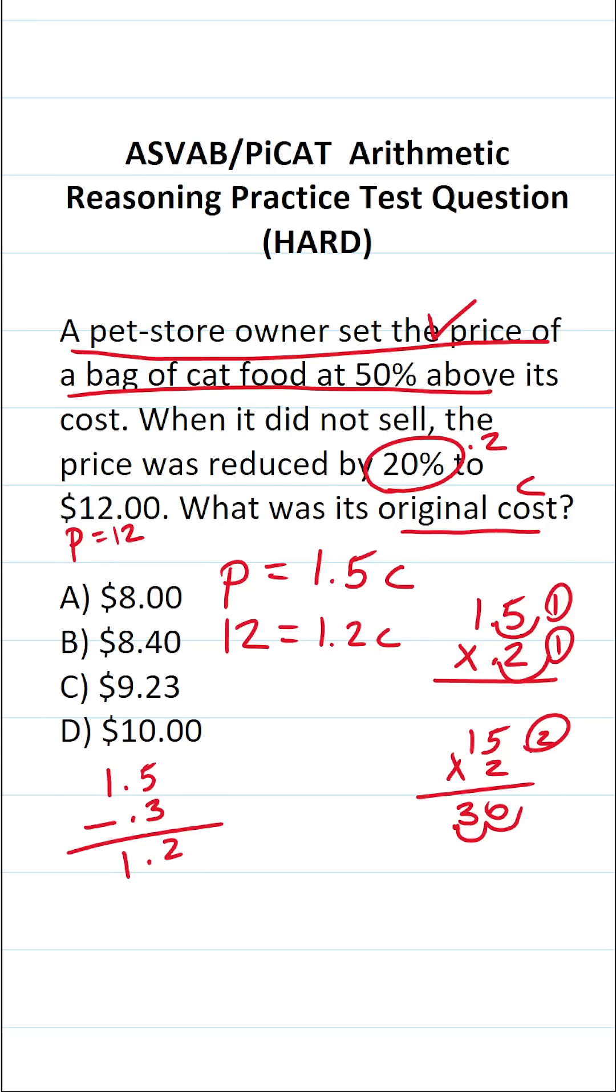So to find its original cost, C, all I have to do is solve this equation for C now. To do that, I'm going to divide both sides of the equation by 1.2. This crosses out, leaving us with C over here. What is 12 divided by 1.2?